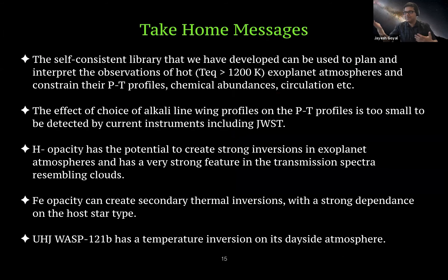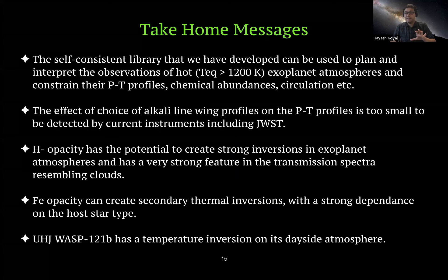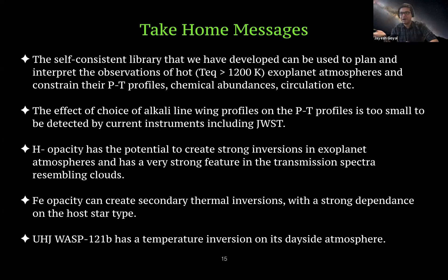Since I'm out of time, here are the take-home messages: We have developed a self-consistent atmospheric library that can be used to plan and interpret observations using JWST and various telescopes, and to constrain different atmospheric properties. The choice of alkali line profiles is too small to be detected by current instruments including JWST. H-minus opacity has very strong potential to form thermal inversions and a strong feature in transmission spectra resembling clouds. Iron opacity can create thermal inversions with strong dependence on the host star type. WASP-120b has a temperature inversion on its dayside atmosphere. Thank you.